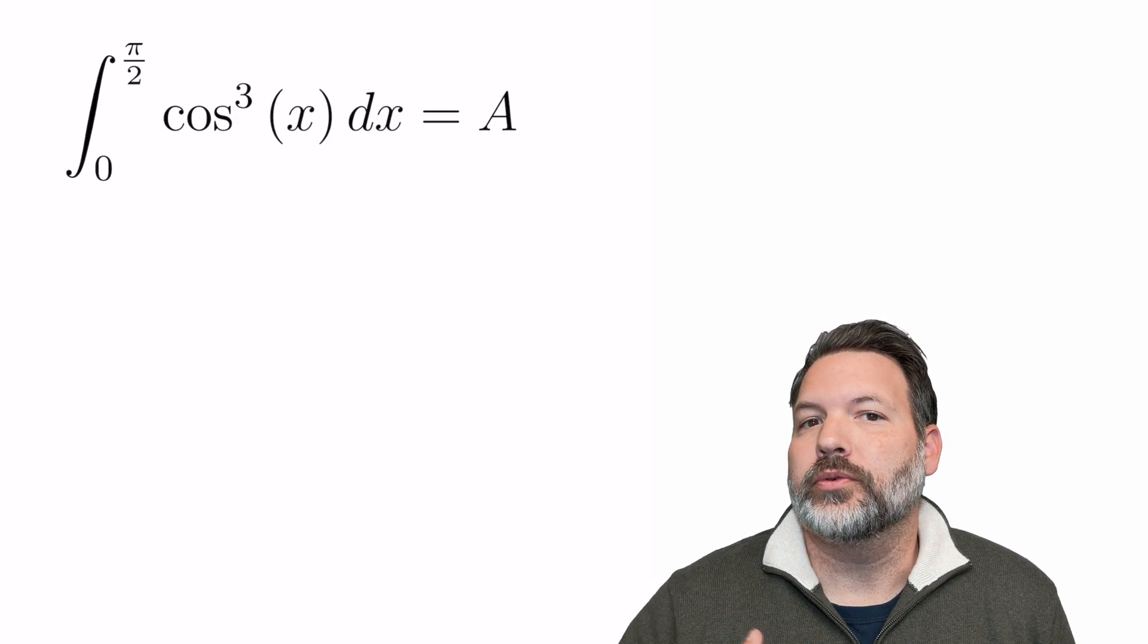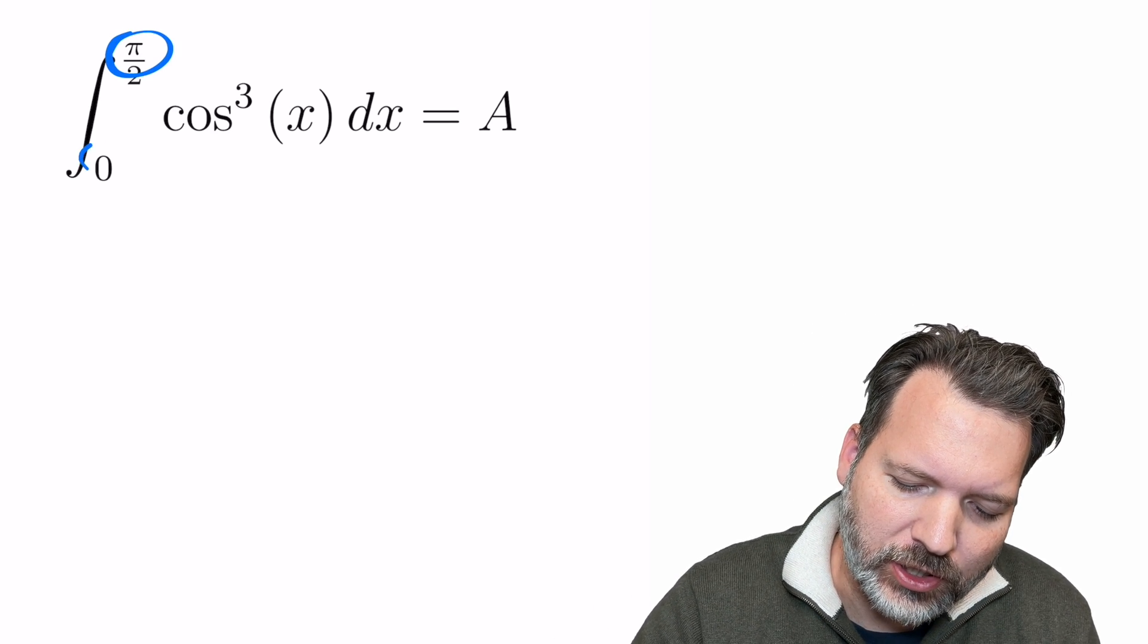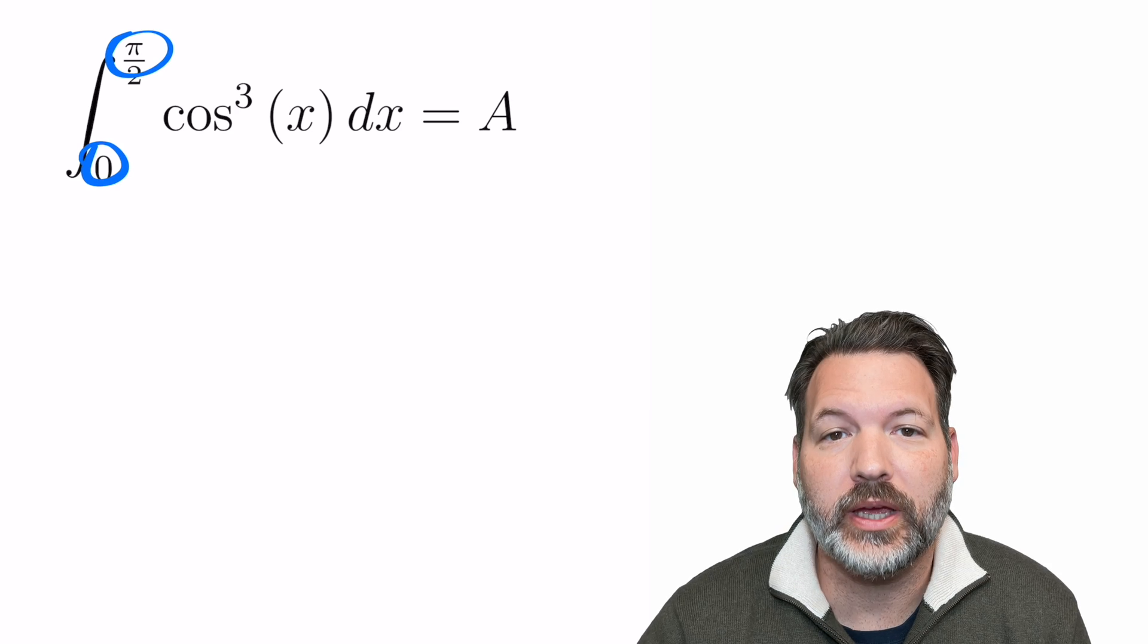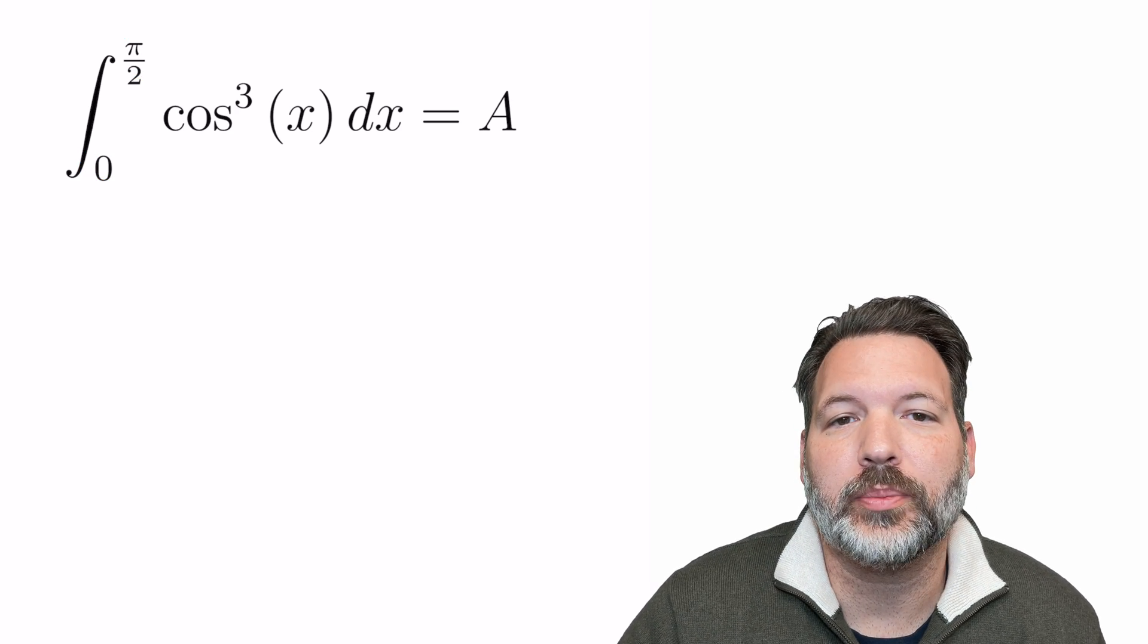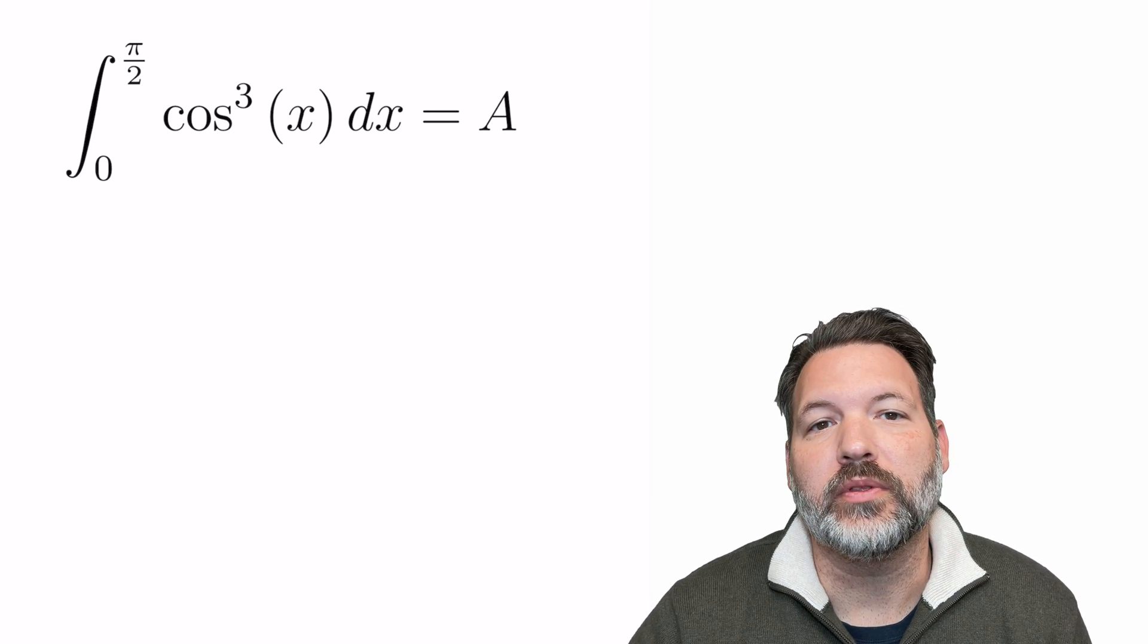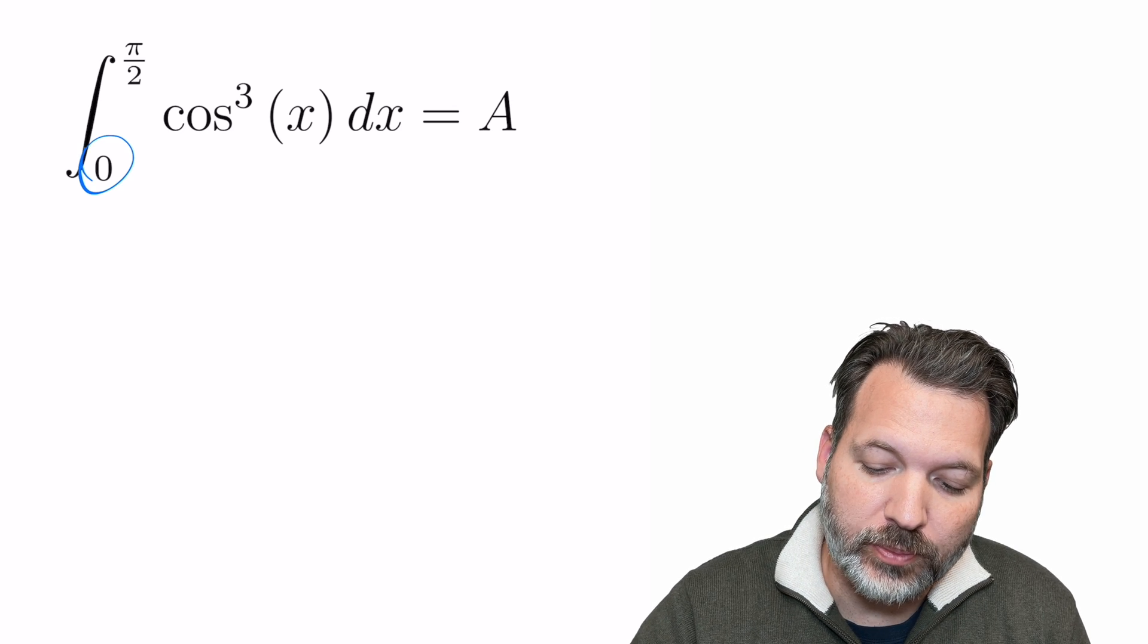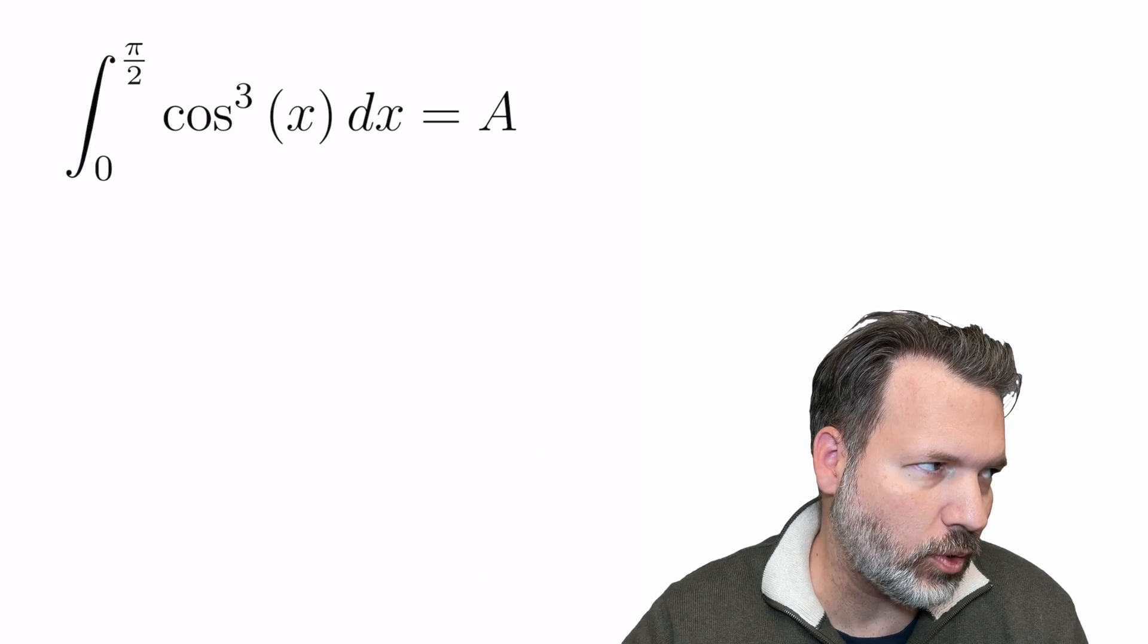So let's consider an integral to think through what on earth is happening with U substitution and why we have to change the upper and lower boundary of our integral when we perform that U substitution. This is another of the black pen, red pen integration B problems and it's another fantastic one. Can we compute the value of the definite integral from zero to pi over two of cosine cubed of x, dx of course.